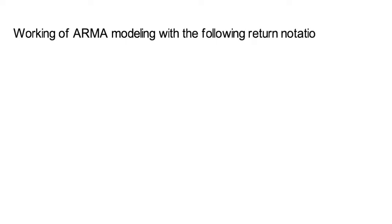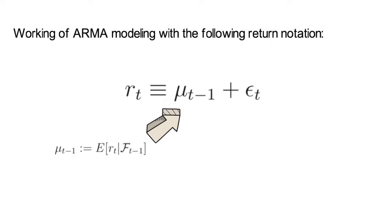Now I'm going to explain the working of ARMA modeling with the following return notation. We can write the return at time t as rt = μt-1 + εt, where μt-1 is simply the conditional expected forecast of the return rt conditional on Ft-1 information.